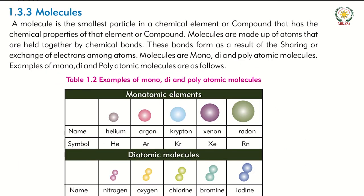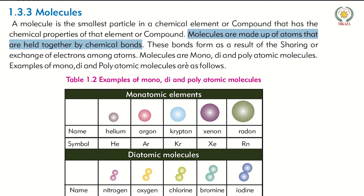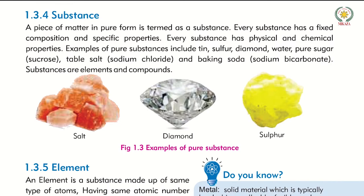Molecules: when same elements combine they form molecules; when different elements combine they form compounds. Molecules are formed by a chemical combination of atoms of elements. They can be monoatomic, diatomic, or polyatomic. Molecules are made up of atoms held together by chemical bonds.